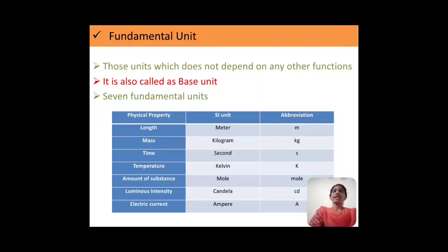First, length, it is measured in terms of meter. Mass is measured in terms of kilogram. Time is measured in seconds. Temperature is measured in kelvin. Amount of substance is in mole. Luminous intensity is measured in candela. The electric current is always measured in ampere. So, the seven fundamental quantities are length, mass, time, temperature, amount of substance, luminous intensity, and the electric current.